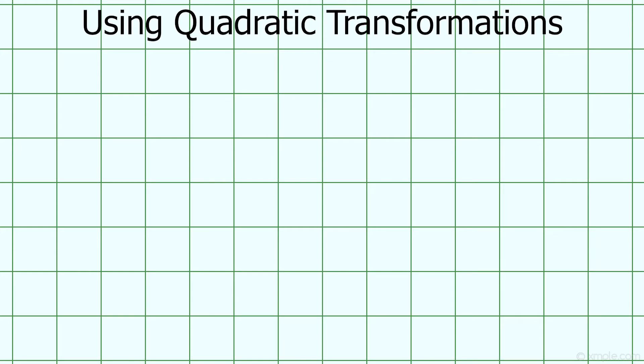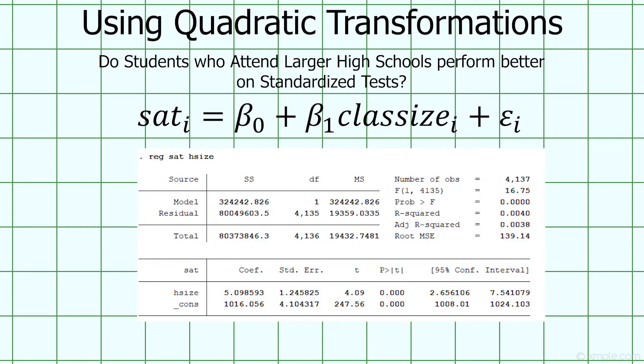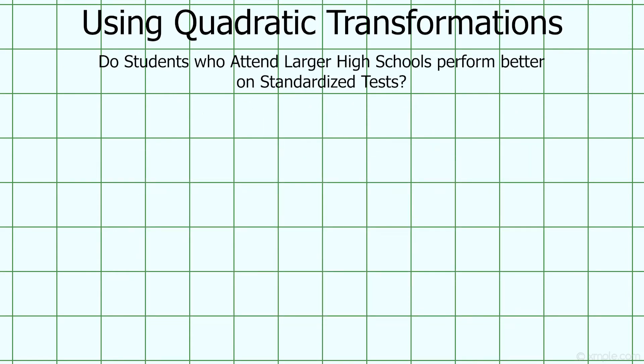We'll start off by examining how regression can be used to capture non-linear relationships between variables. Let's say we're interested in whether students who go to larger high schools perform better on standardized tests like the SAT. Using a data set of high school seniors, we regress each student's SAT score on the size of their high school's graduating class, which gives us this result. Notice that the coefficient on class size is positive and statistically significant, which would seem to indicate that an additional 100 peers in a student's graduating class raises that student's SAT score by 5 points.